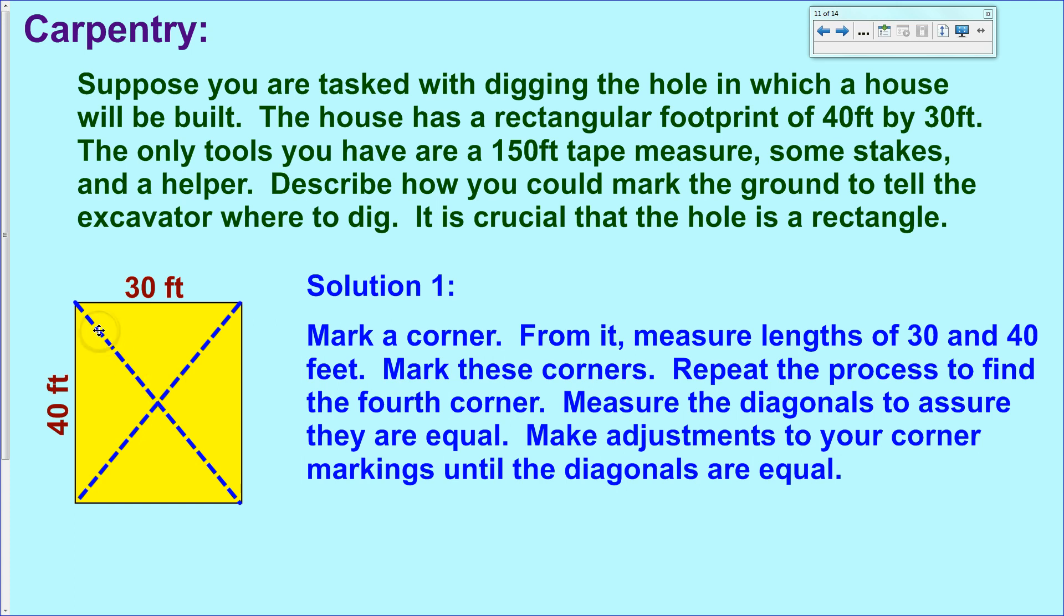So one way that you could do this is mark a corner, put a stake right there on that corner, and then measure 30 feet from it, and then 40 feet from that in what you think is a right angle. So from your first stake, mark out 30 feet, throw your second stake down. It's very easy to make a straight line. That's no problem.